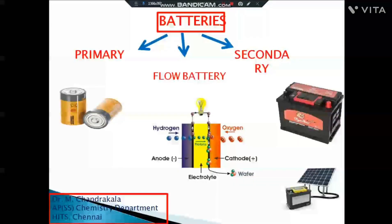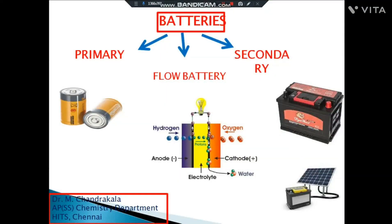In this video, let us see about batteries. What are batteries? Batteries are energy storing devices. They are broadly classified as primary, secondary, and flow batteries. Primary batteries cannot be recharged because the cell reactions are not reversible. For example, dry cell or Leclanché cell, which are used in torches — they cannot be recharged.